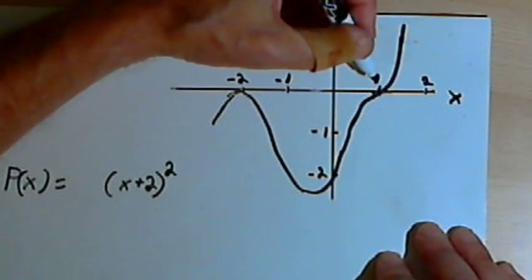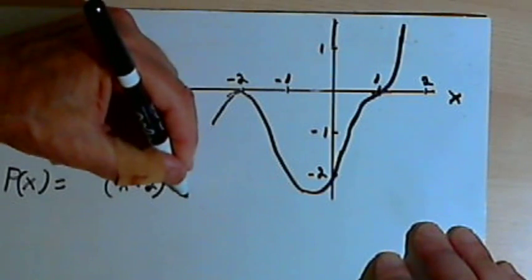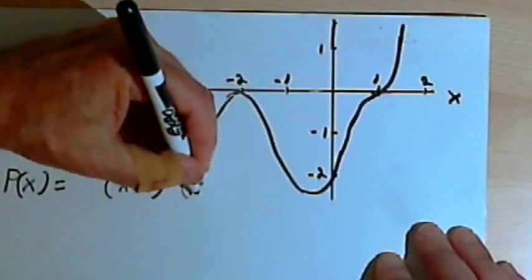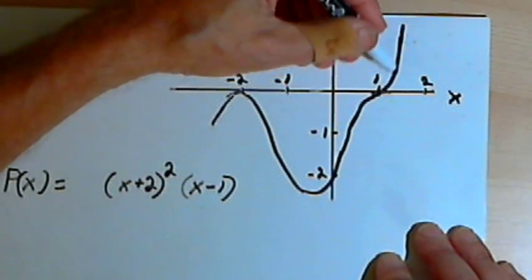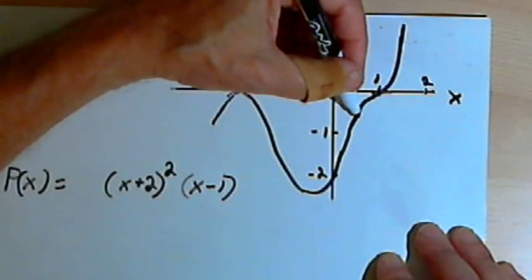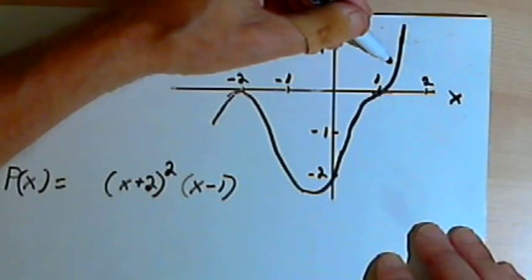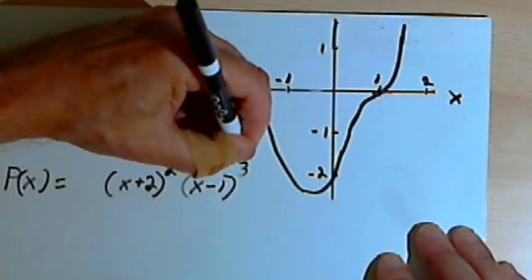It also goes through the x-axis at x equals 1. So that means the other factor I'm going to have is x minus 1. But it doesn't go straight through. It makes this s-curve. So that's telling me there's another multiplicity. If it makes an s-curve like that, it's going to be an odd multiplicity. So let's call that x minus 1 to the third power.